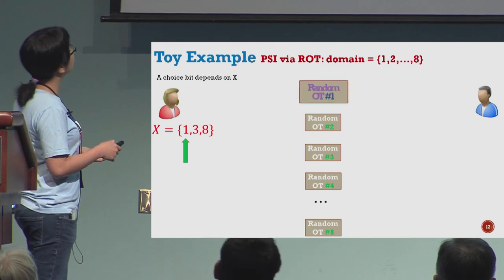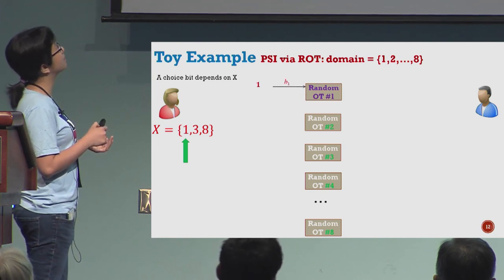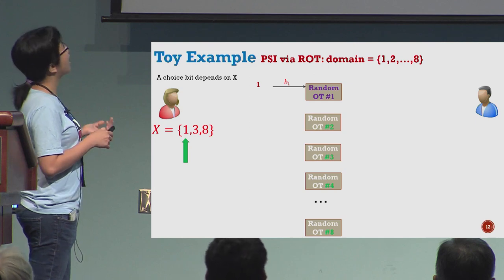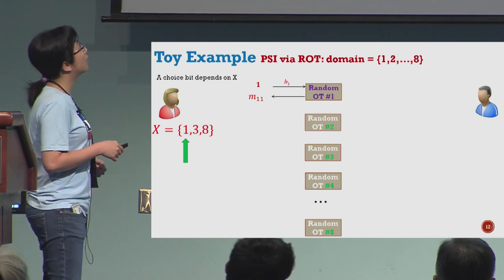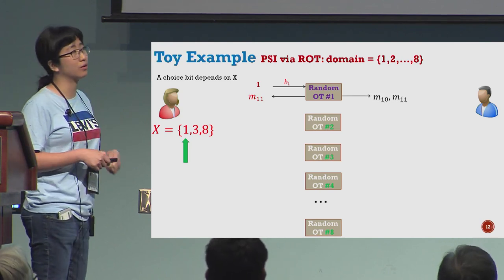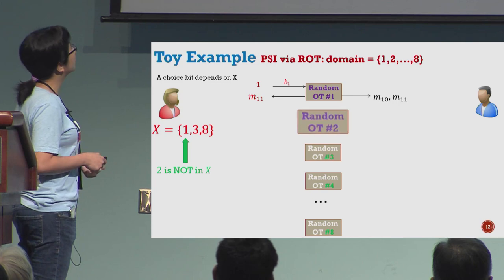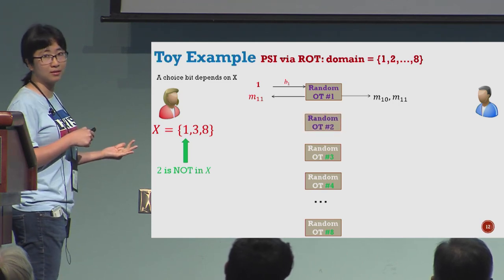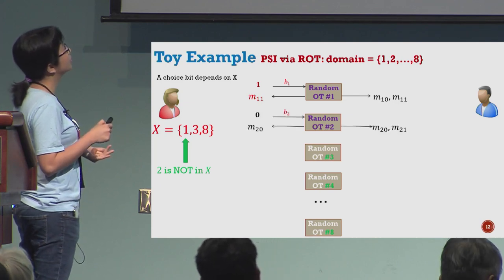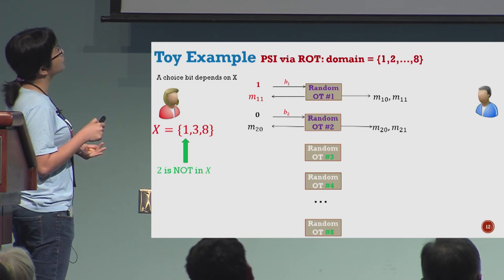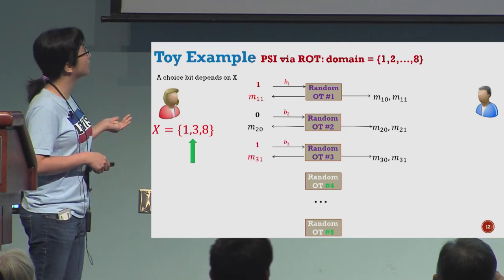Looking at the first random OT, you can see that Alice has number 1, so her input to this first OT is 1 and she receives M11 corresponding to her choice. On the other side, Bob receives two random OT values. For the second OT, because number 2 isn't in her set, her choice bit is 0 and she gets M20. The same for number 3 with choice bit 1, and so on.